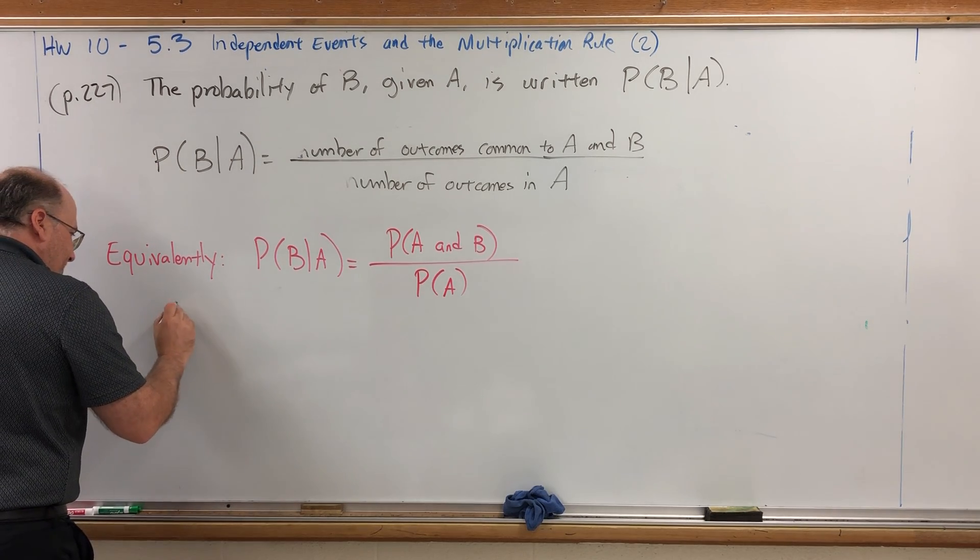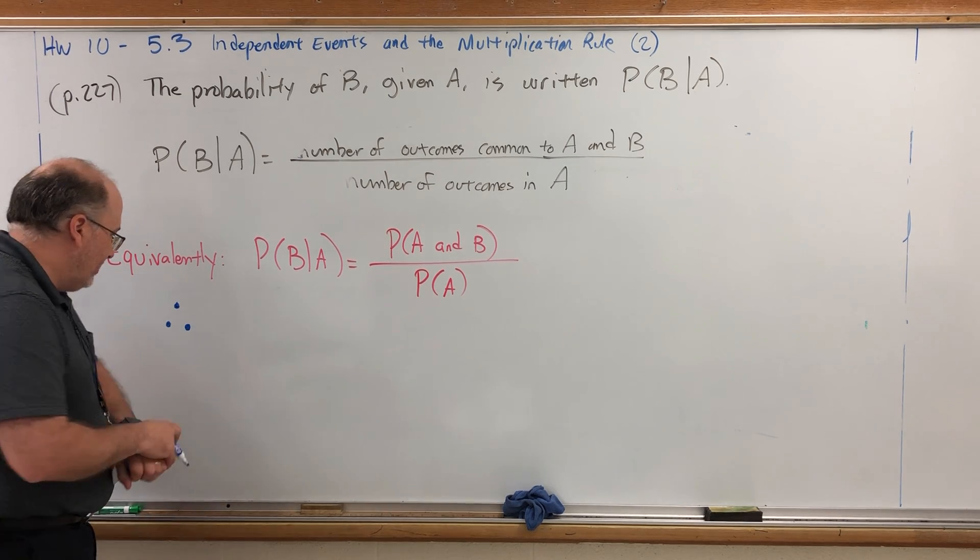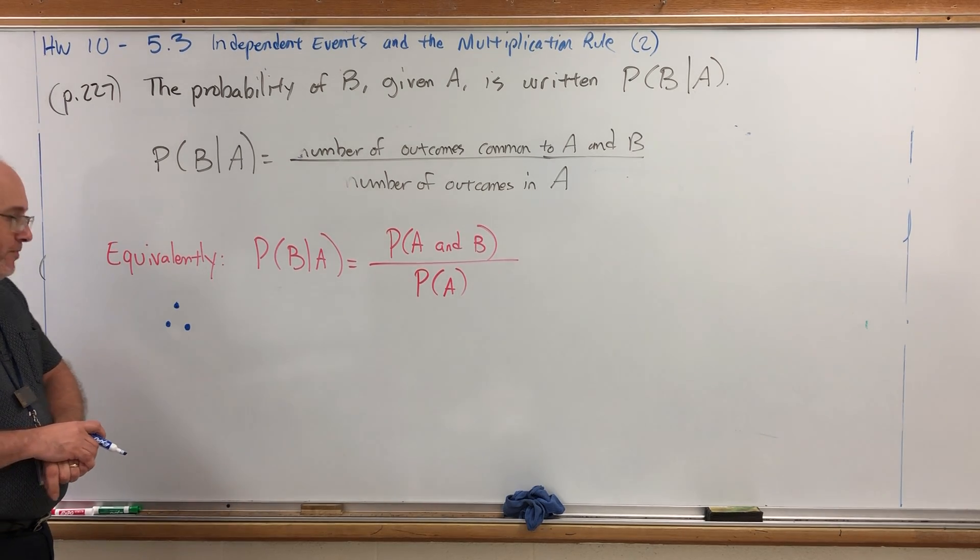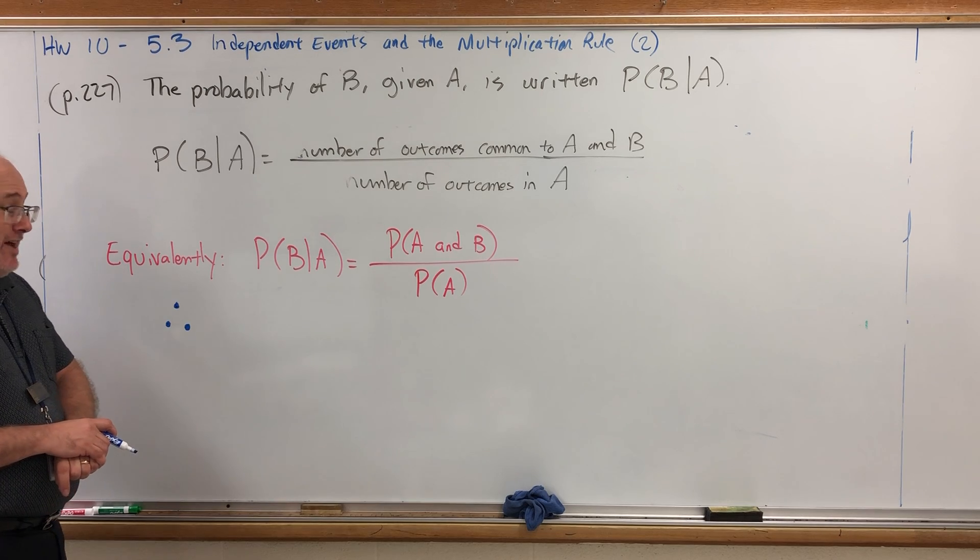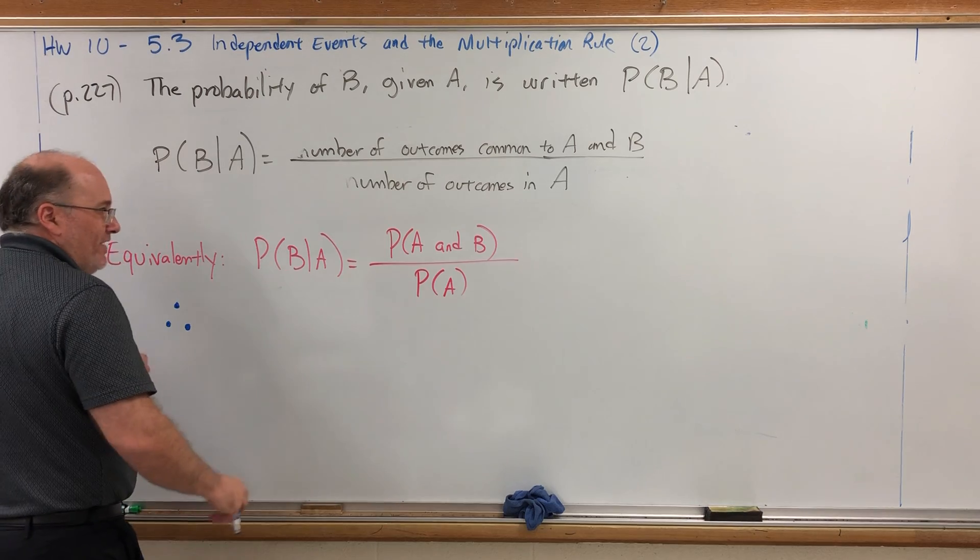So as a consequence of this, I can't remember if I've shown you how the three-dot triangle assemble for the word therefore, but it basically means we're about to draw a conclusion. If I multiplied both sides of this formula by the probability of A, I would essentially get a new formula for the probability of A and B.